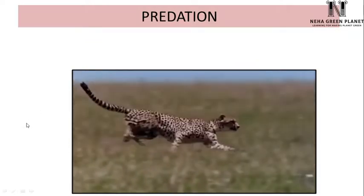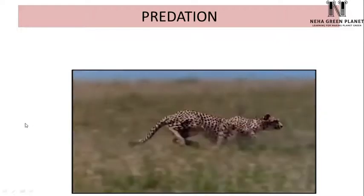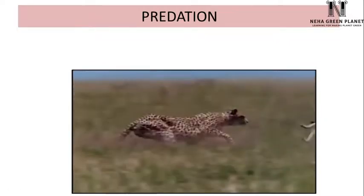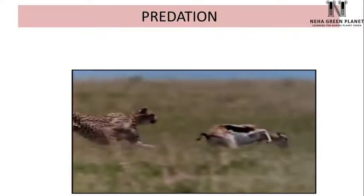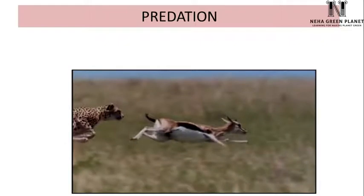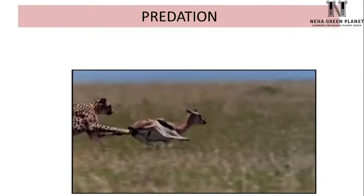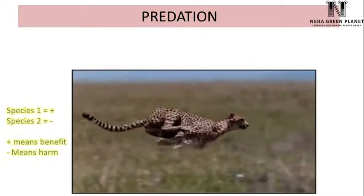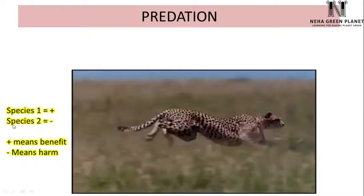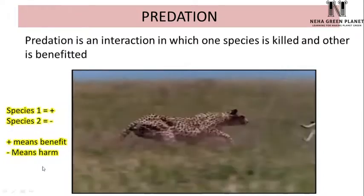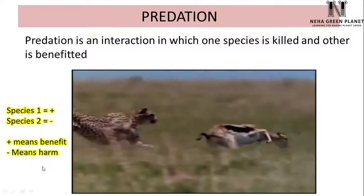In predation, consider the example of a cheetah capturing and eating a deer. The predator — the cheetah — gets benefited because it derives nutrition and food, while the prey — the deer — is killed. So predation is an interaction in which one species is killed and the other is benefited.